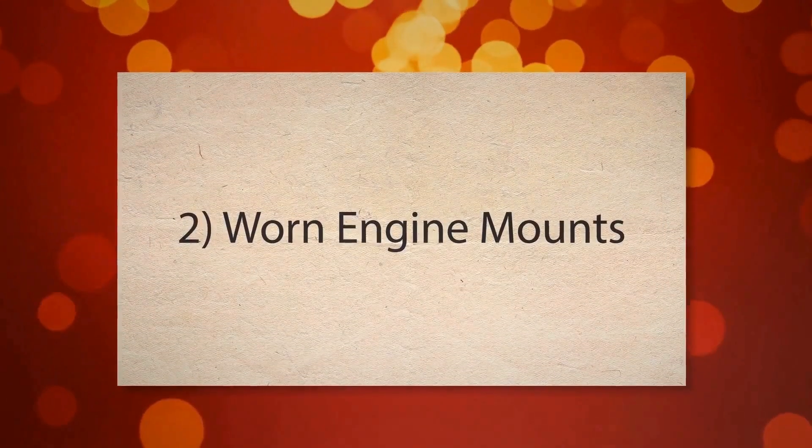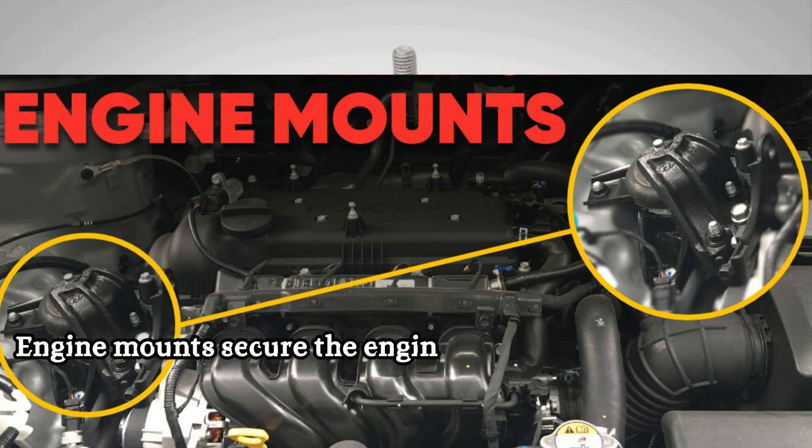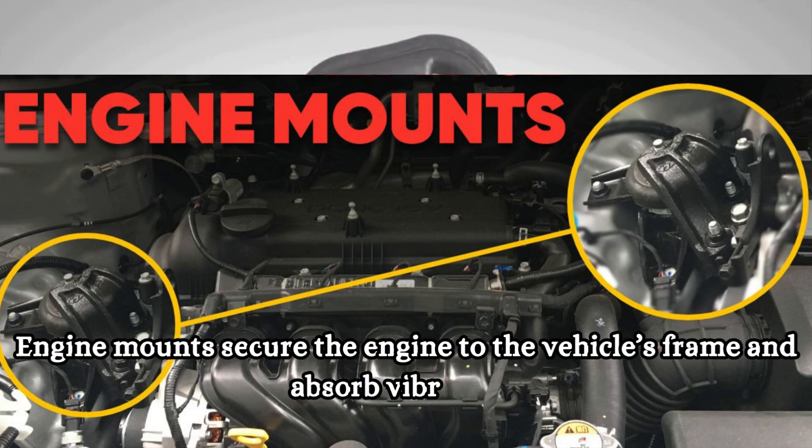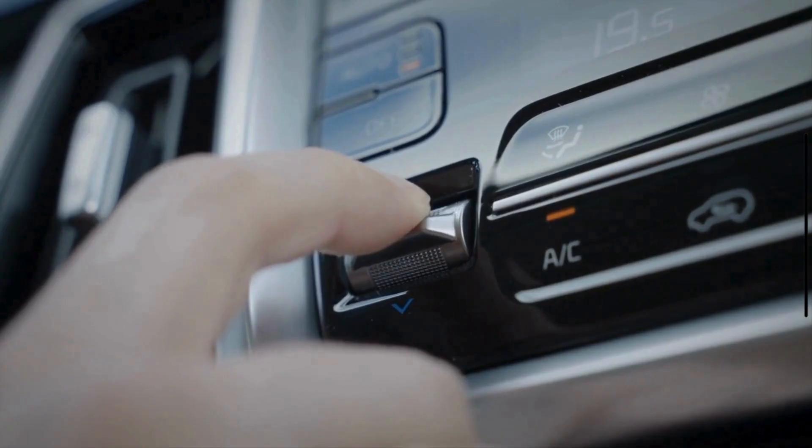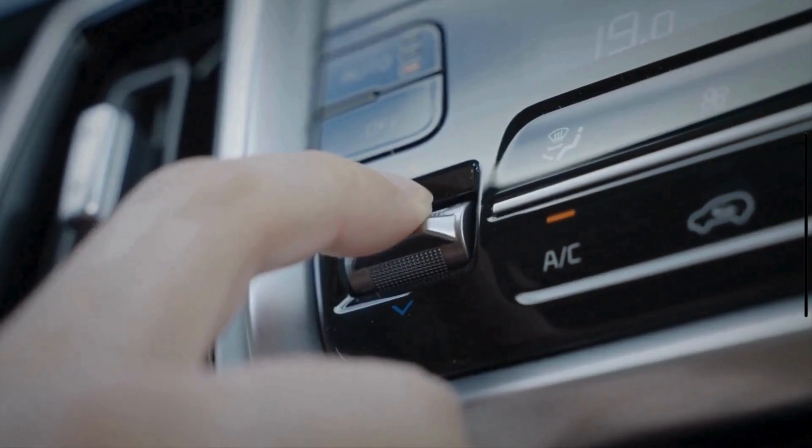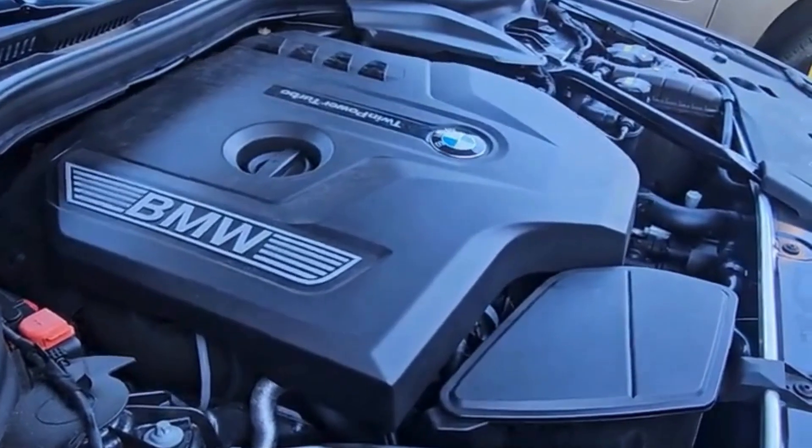2. Worn Engine Mounts. Engine mounts secure the engine to the vehicle's frame and absorb vibrations. Over time, these mounts can wear out or break. When the AC is on, the added load can make these vibrations more pronounced, which causes noticeable shaking.